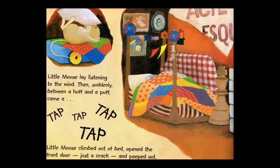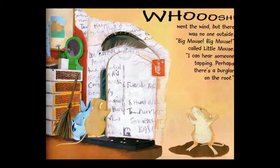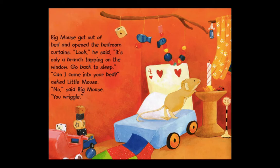Little Mouse lay listening to the wind. Then suddenly, between a huff and a puff, came a tap, tap, tap. Little Mouse climbed out of bed, opened the front door just a crack, and peeped out. Whoosh went the wind, but there was no one outside. 'Big Mouse, Big Mouse,' called Little Mouse. 'I could hear someone tapping. Perhaps there's a burglar on the roof.' Big Mouse got out of bed and opened the bedroom curtains. 'Look,' he said. 'It's only a branch tapping on the window. Go back to sleep.'